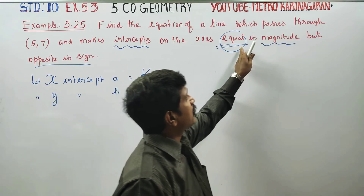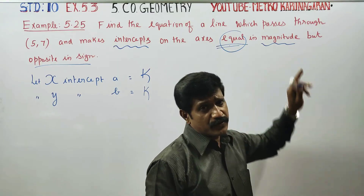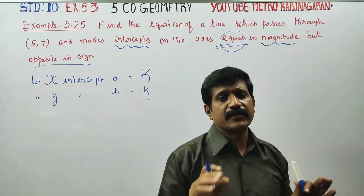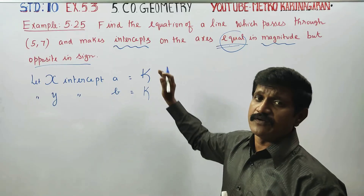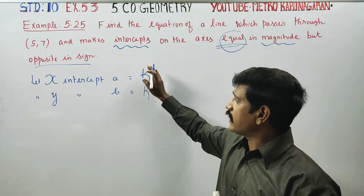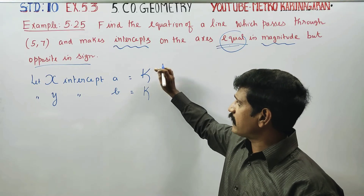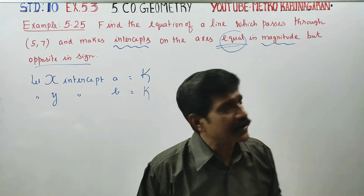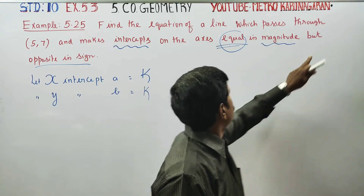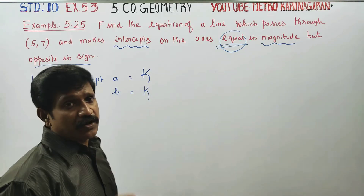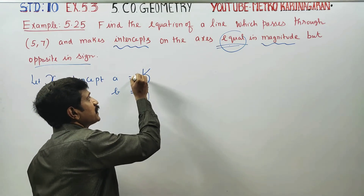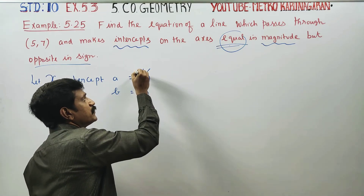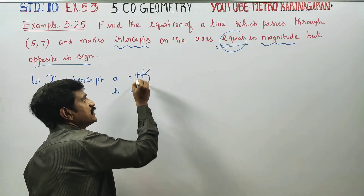Equal in magnitude means the numerical value is the same — for example, 5 and 5, 10 and 10, 4 and 4, 3 and 3. In general, we write the magnitude as k and k. But opposite in sign means one is plus k and the other is minus k.